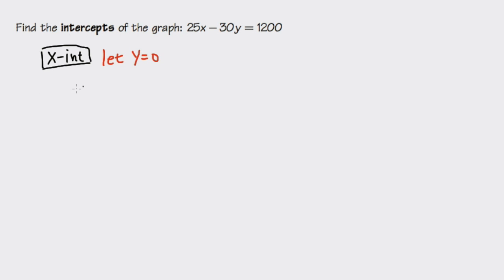So we will have 25x right here, minus 30. And this y now will become 0. Let me just plug in 0 into this parentheses. And then we have this, it's equal to 1200. So this is the equation that we have to solve.